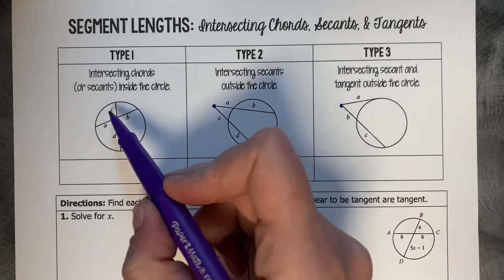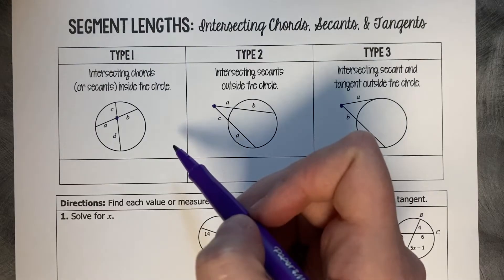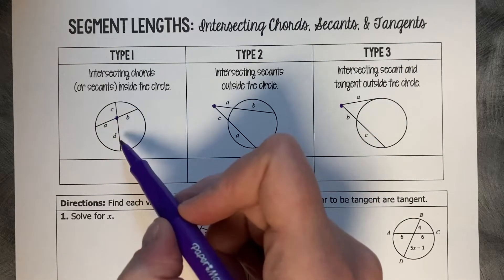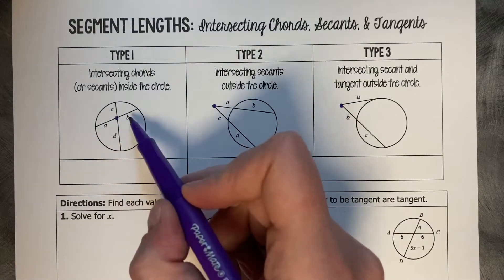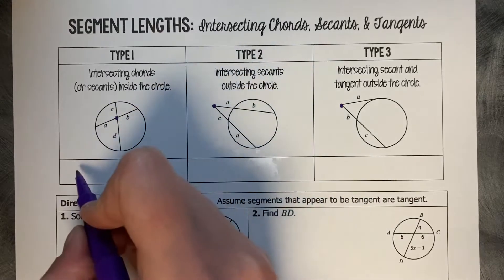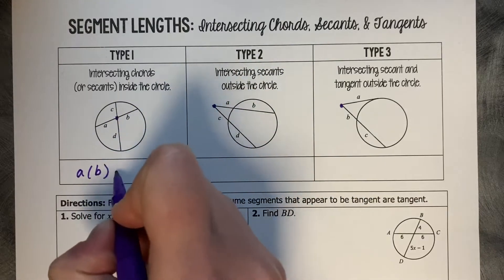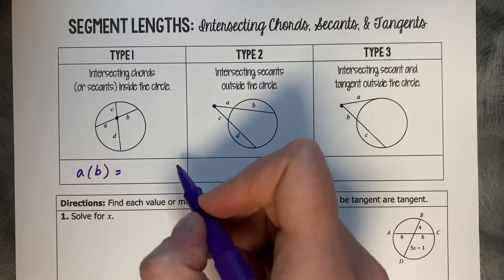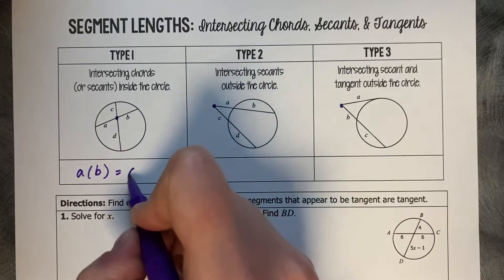So to find any given length of these lines, they're proportionate to each other, which means you can create a proportion. And if you cross multiply it, you would end up multiplying these proportionate lengths together. So A times B equals C times D.